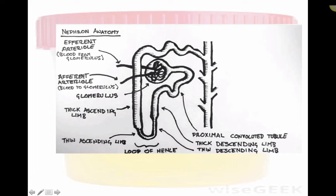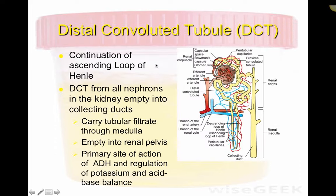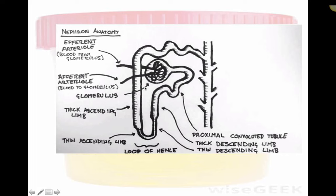The loop of Henle is divided into four components: the thick descending limb, the thin descending limb, the thin ascending limb, and the thick ascending limb. The distal convoluted tubule is a continuation of the thick ascending limb of the loop of Henle. The distal convoluted tubules from all nephrons in the kidney empty into the collecting ducts.